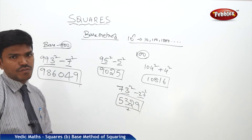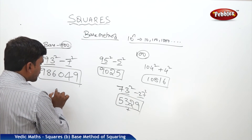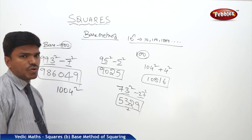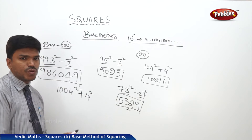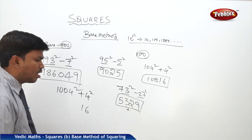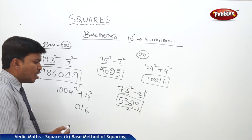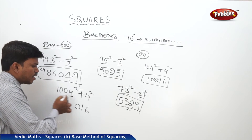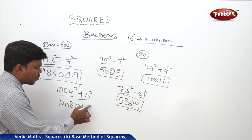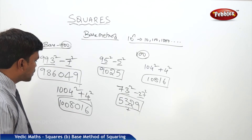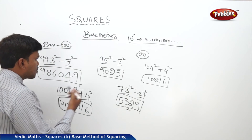One more example for base 1000: I need 1004 squared. Compare 1004 with base 1000 — it is more by 4. What is 4 squared? 16. But the right side part must have 3 digits, so it is 016. For the left side part, add: 1004 plus 4 is 1008. So the answer is 1008016.